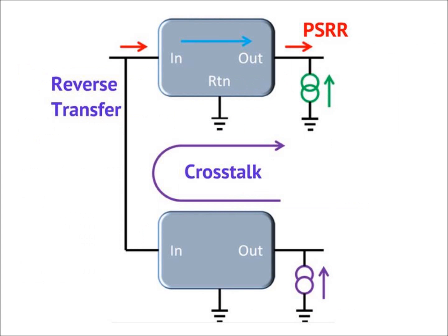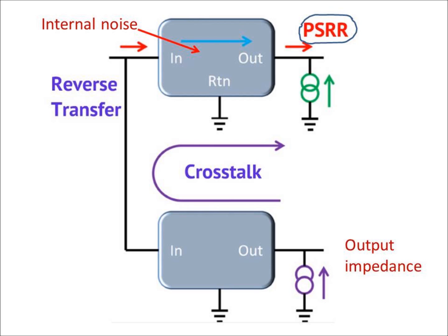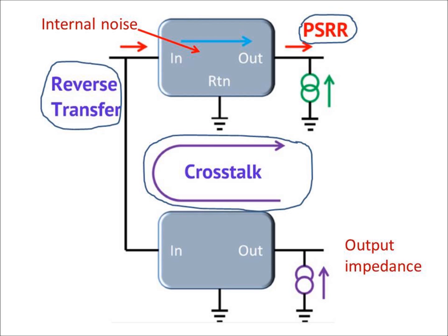There are four propagation paths — five if we count air transmission — that we are interested in investigating in distributed power systems. PSR is the path from the intermediate or input bus through the regulator to the output. Internal ripple and noise are the second contributors. Dynamic load demand, which mixes with the regulator output impedance, presents a third path. And finally, there's a reverse transfer cross-talk path from other regulators in the system. One of the major conduits for the degradation due to these paths is poor control loop stability of the various regulators and other circuits.